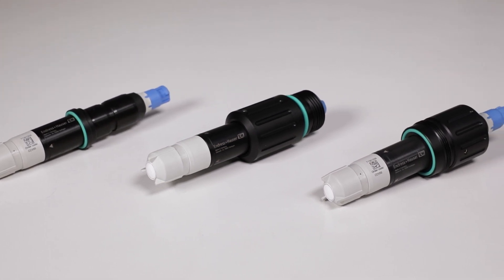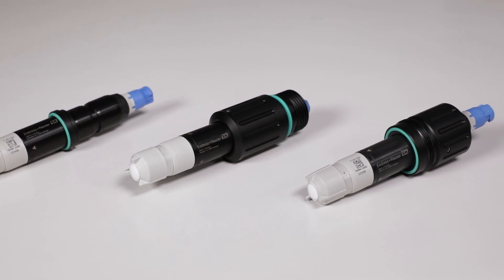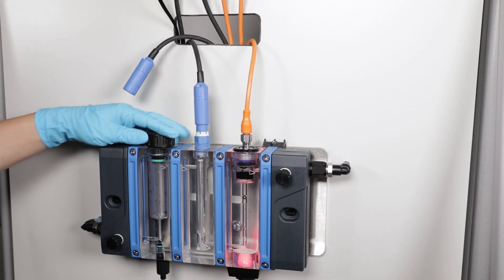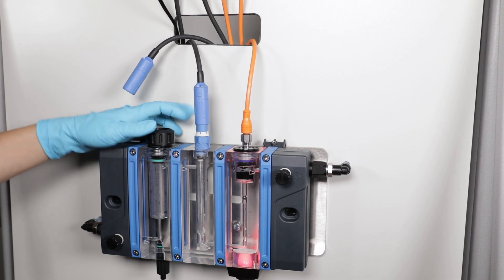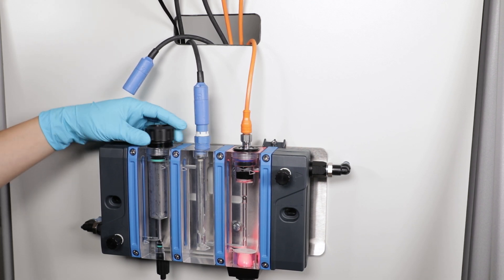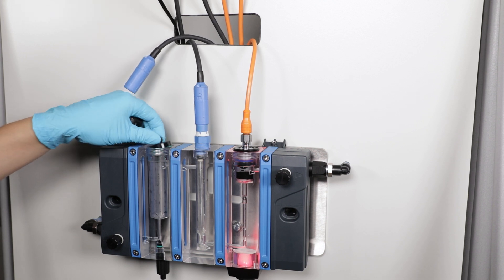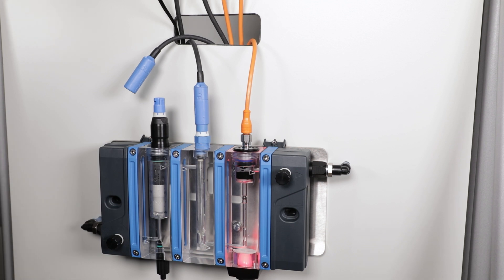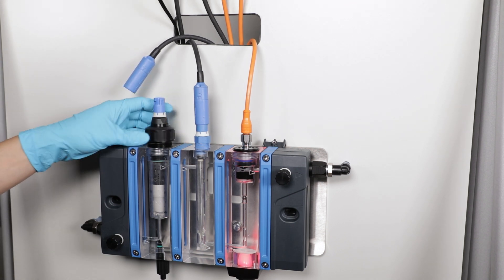First let's take a look at the installation into the Flowfit CYA27. Remove the blind plug from the CYA27 assembly and insert the sensor. Screw the coupling nut onto the assembly.